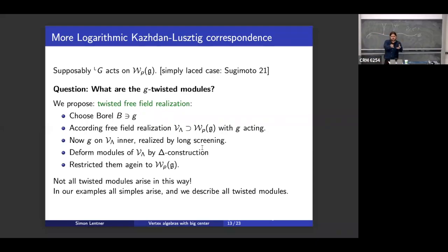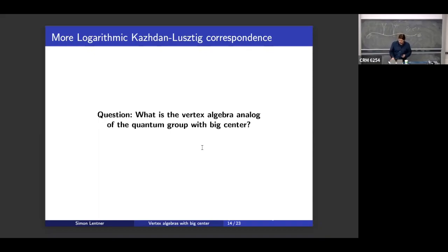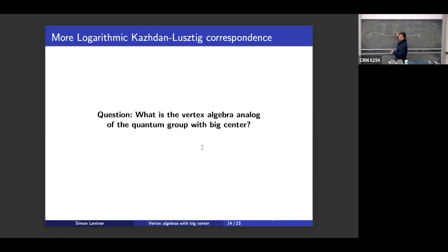So we have a correspondence between a vertex algebra and a quantum group. We ask: what are the twisted modules on the vertex algebra side? We get a G-crossed category. Now the main question is: can we find a vertex algebra analogous to the big-center quantum group? Is there a very big vertex algebra with a central sub-algebra that fibers like this? And then can we find a single VOA whose representation category captures all of this — the G-twisted modules of the Feigin-Tipunin algebra — as a representation category?